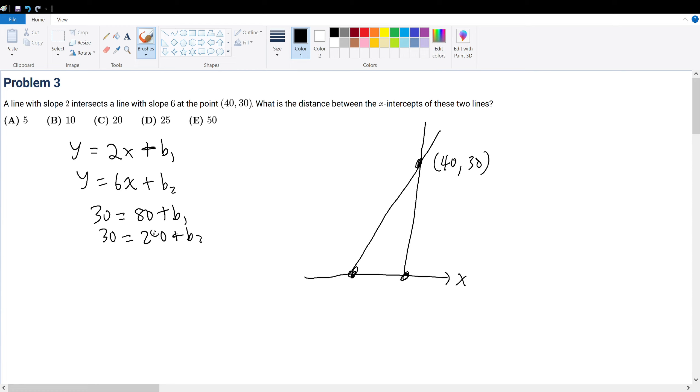So, what does that mean? That means that b1 = -50, and that means b2 = -210. So that means y = 2x - 50, and this is y = 6x - 210.